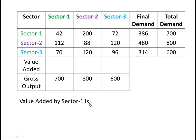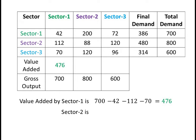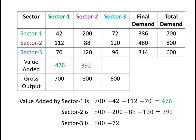Therefore, value added by sector 1 is 700 minus 42 minus 112 minus 70, which equals 476. Value added by sector 2 is 800 minus 200 minus 88 minus 120, which equals 392. Finally, value added by sector 3 is 600 minus 72 minus 120 minus 96, which equals 312.